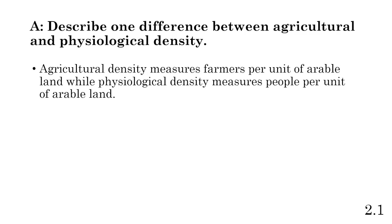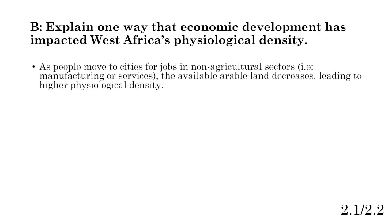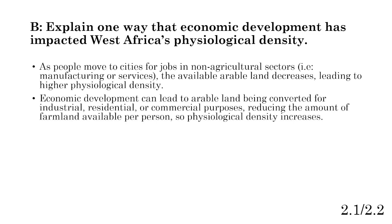That's different from arithmetic density, which is people per unit of all the land within an area. Part B: explain one way that economic development has impacted West Africa's physiological density. As people move to cities for jobs — typically in non-agriculture sectors like manufacturing, industry, or services — the amount of arable land is going to decrease, and that's going to lead to a higher physiological density because we have more people and less arable land.